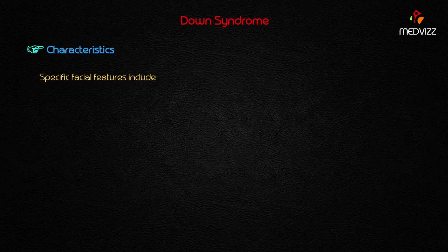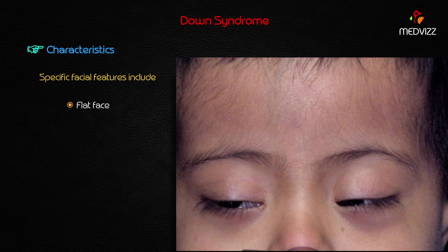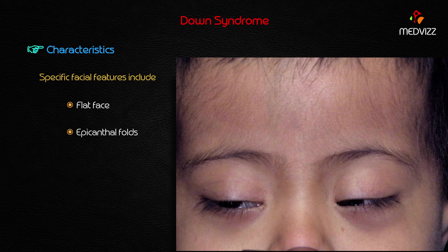Facial features include flat face, epicanthal folds, and wide-set eyes. For USMLE purposes, epicanthal folds are considered the marker for Down syndrome — they will be given in the majority of cases along with wide-set eyes.